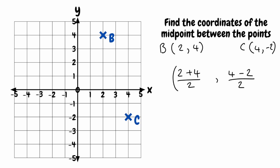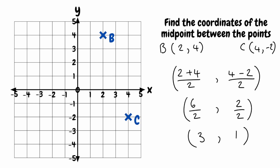Simplifying the numerators: 2 add 4 gives us 6, and 4 take away 2 gives us 2. For our final step, 6 divided by 2 is 3, and 2 divided by 2 is 1. Those would be the coordinates for our midpoint between the points of B and C, which sits at 3, 1 on the grid.